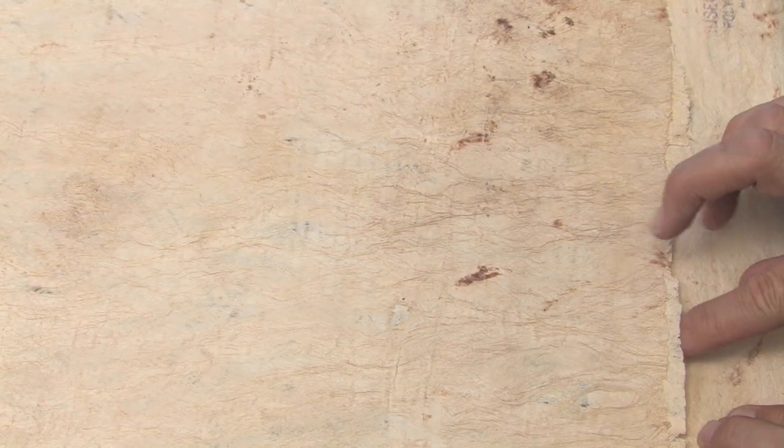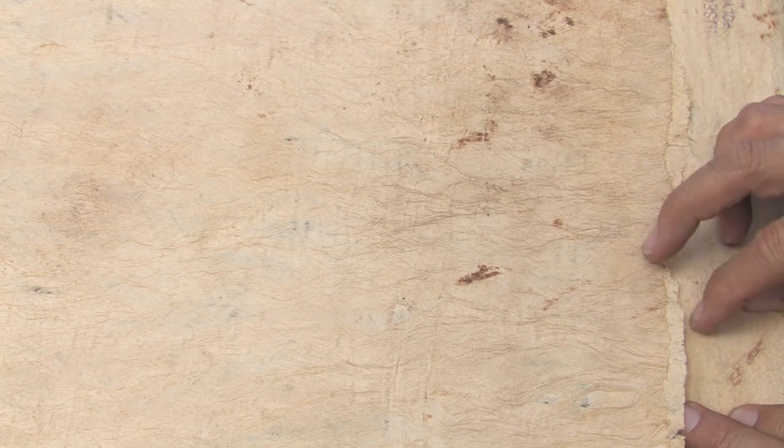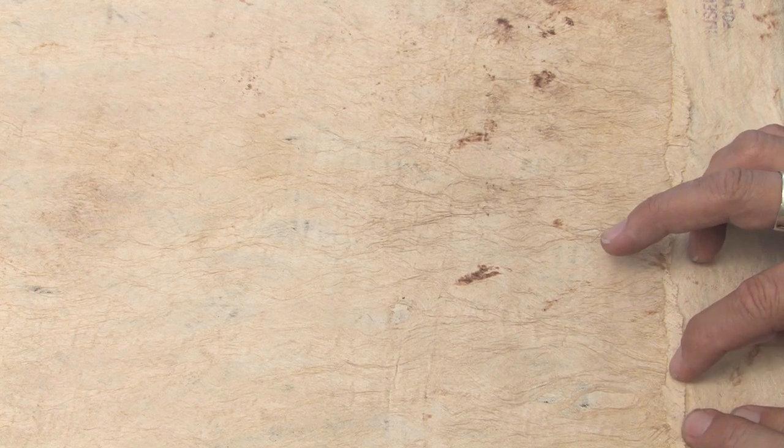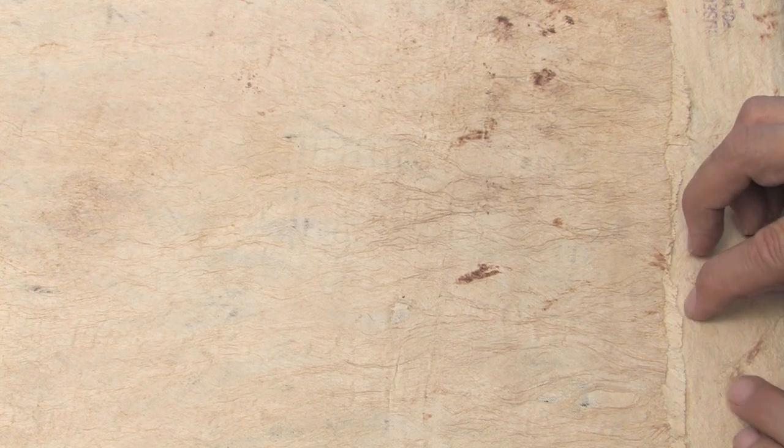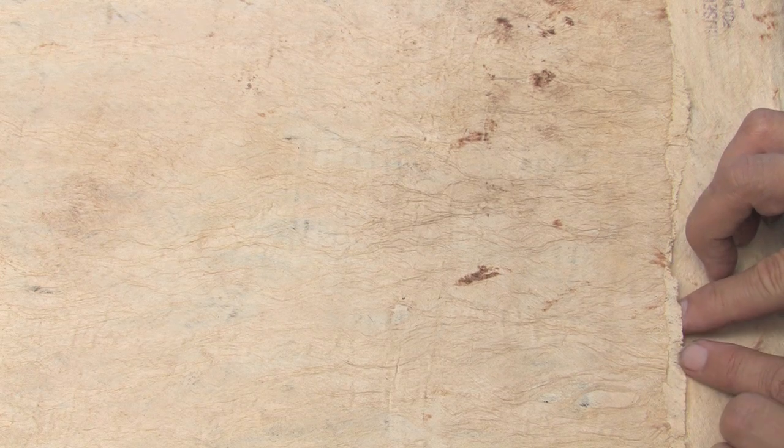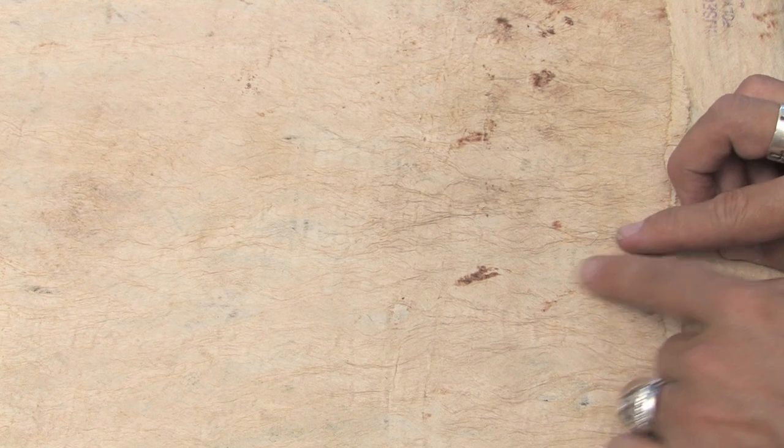This is a piece of tapa cloth made by Polynesian peoples in Tonga, and you can see the edge of it here that I'm putting my finger underneath, and you can see the texture of it.